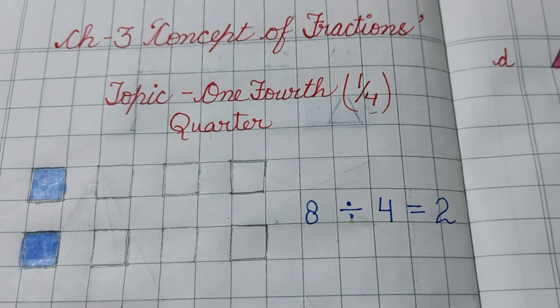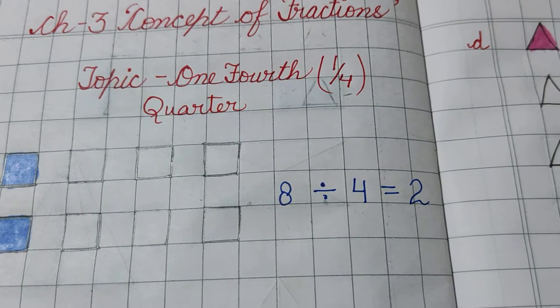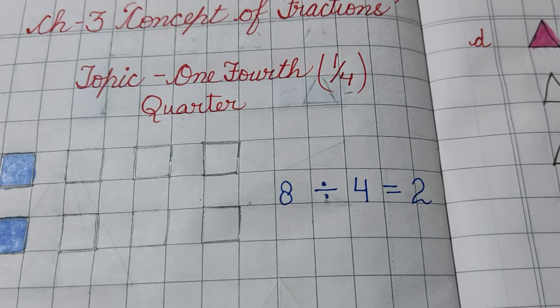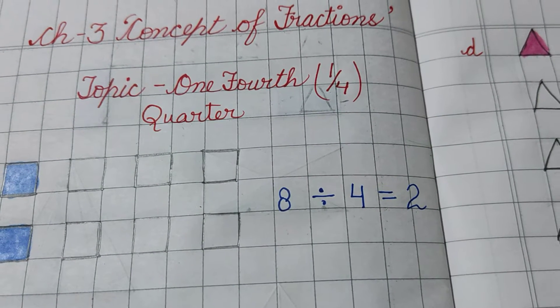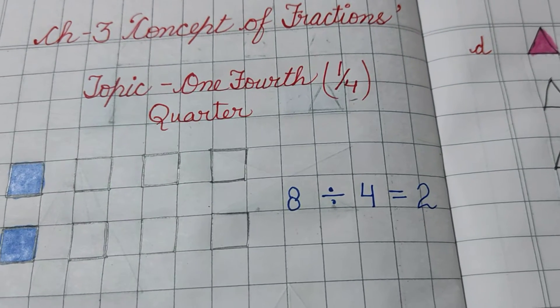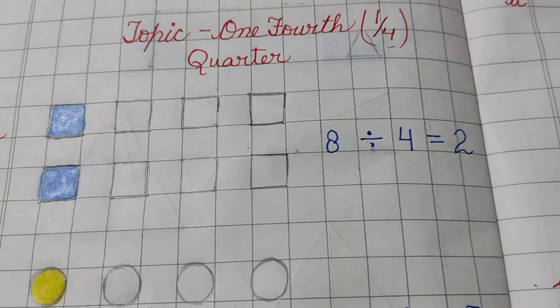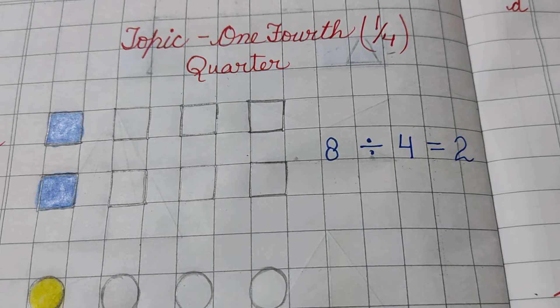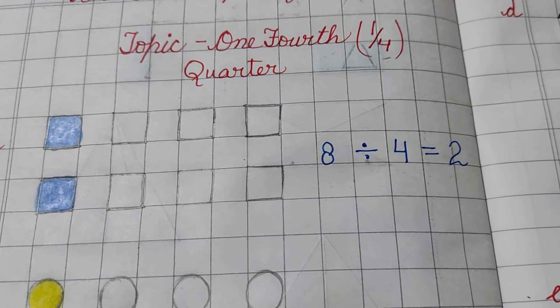In earlier videos you have seen, it is very easy to mark 4 equal parts of a shape and we have to color one-fourth part to denote that part. But if the number of things are more, then how to find out one-fourth? Then we have to divide the number by 4 to get the answer.